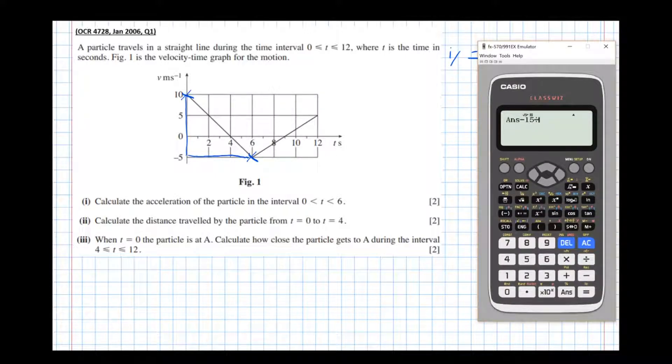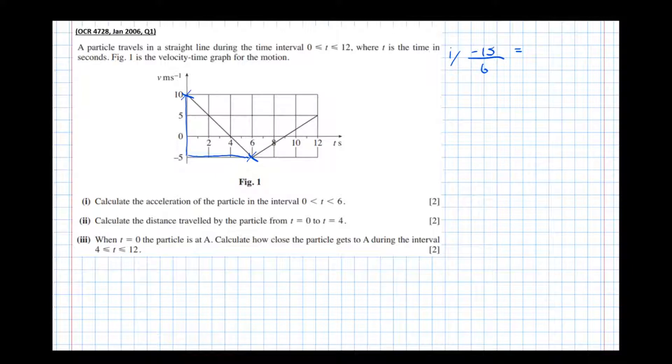Negative 15 divided by 6 is minus 2.5 meters per second squared. The unit's important as is the negative sign.